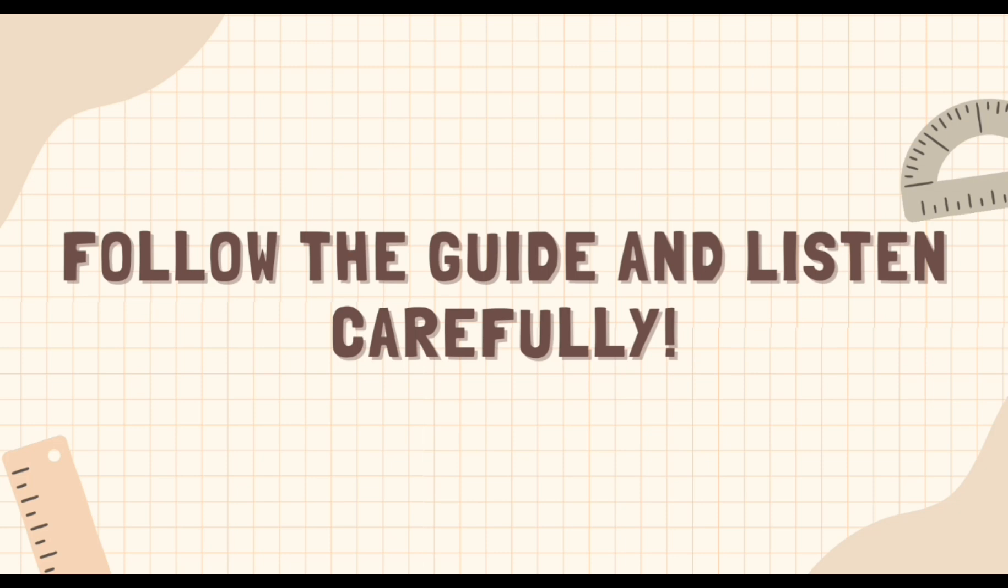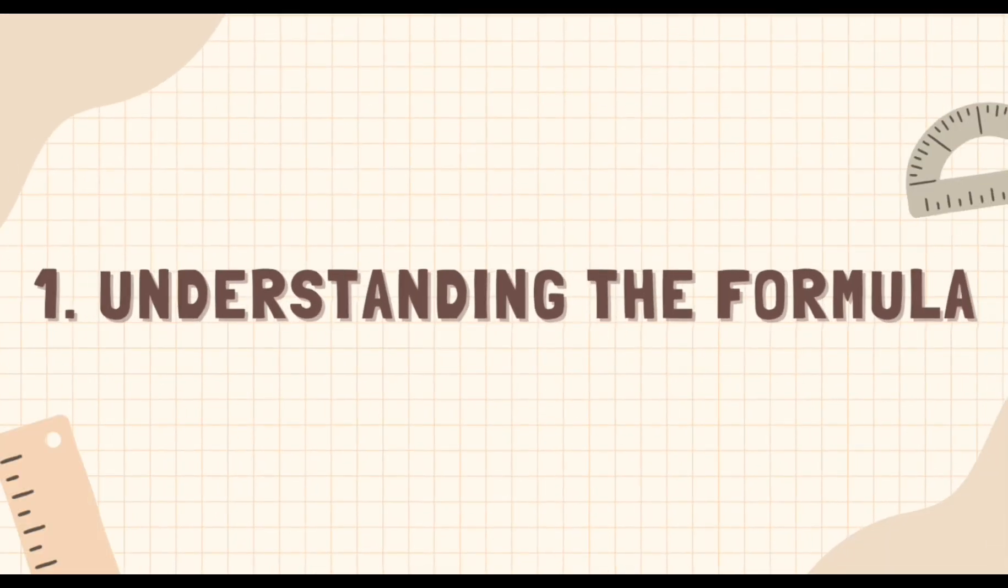Sundan natin ang guide kung paano gamitin ang formula na maayos. First, understand the formula. The arithmetic sequence formula is used to find the n-th term of an arithmetic sequence. An arithmetic sequence is the sequence of numbers in which the difference between consecutive terms is constant. The formula is a sub n is equals to a sub 1 plus the quantity of n minus 1 multiplied by d or the common difference.